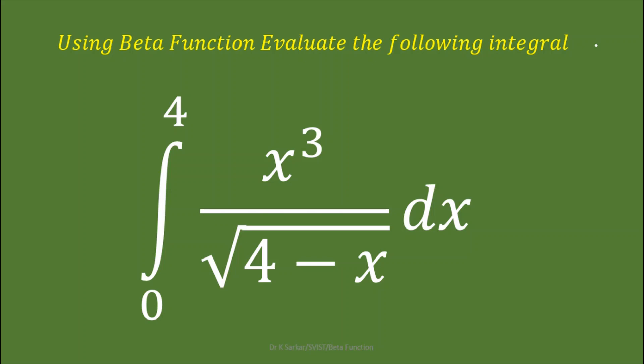Using the Beta function, evaluate the following integral: integration from 0 to 4 of x cubed divided by the square root of (4 minus x) dx. Before solving the integration, let us recall a few formulas.